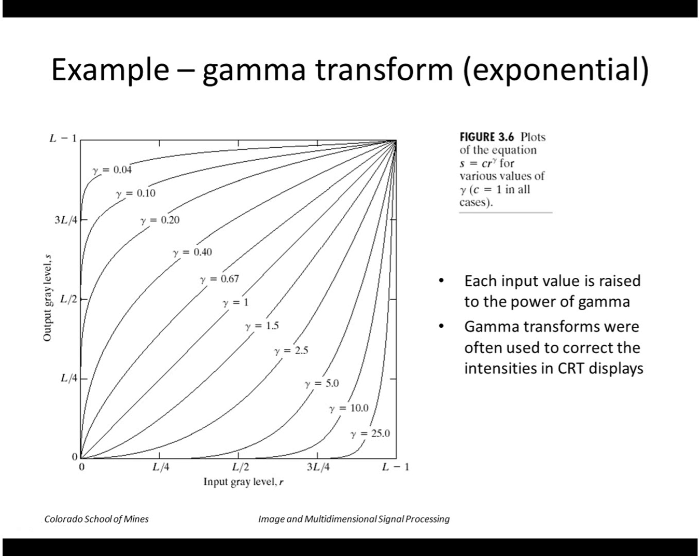An example of a gray level transformation is the gamma transform family, where the transform is this equation: s equals c r to the gamma. Gamma of one is no transform. Gamma values greater than one, for example two, represent a square function. Gamma values less than one, for example 0.5, would represent a square root function.